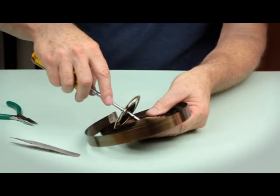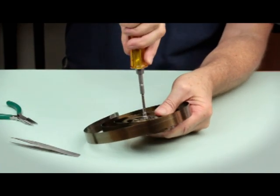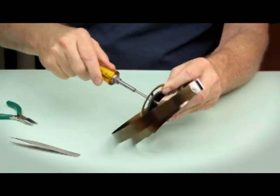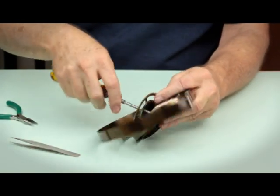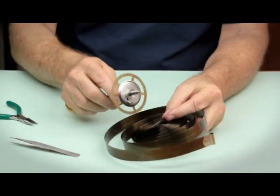Slip the winding arbor into the center of the mainspring. Check to make sure that the spring is coiling in the proper direction so that the spring will wind properly. Remember, the ratchet wheel and click on the winding arbor determines which way the spring winds. If you install the spring improperly, it won't wind and you'll have to remove the spring, turn it over, and reinstall it.